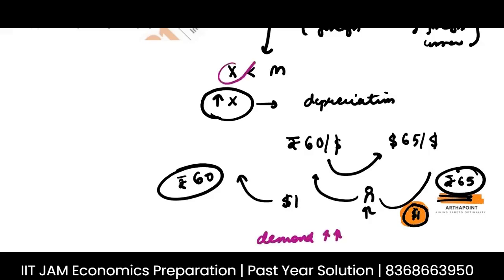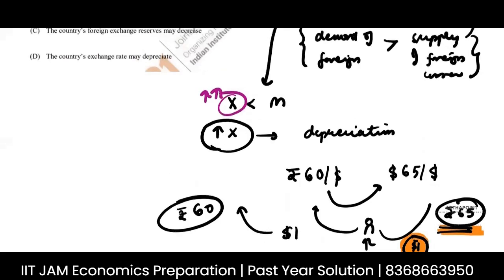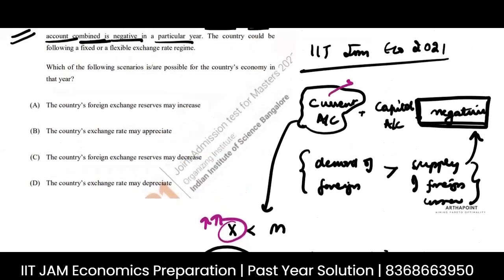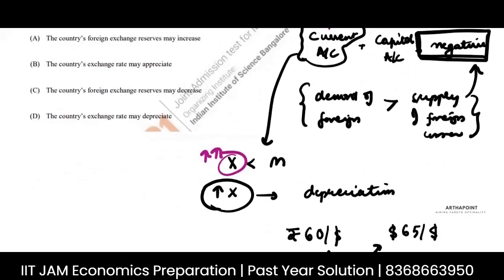Your exports will start increasing. When your exports will increase, automatically your current account will improve. So one way to deal with this is to depreciate your currency.